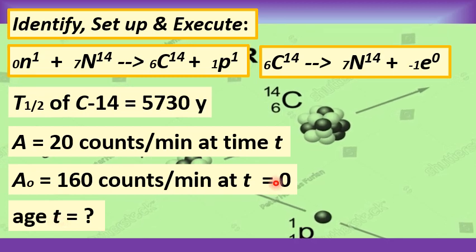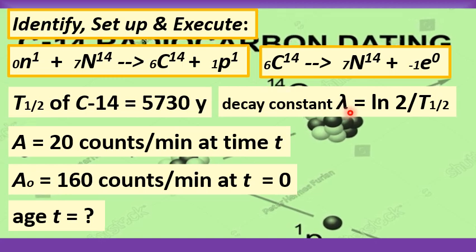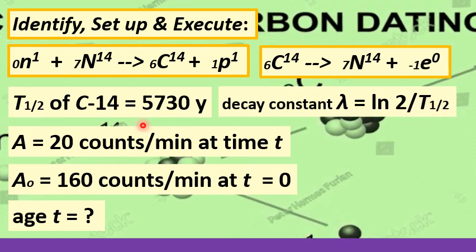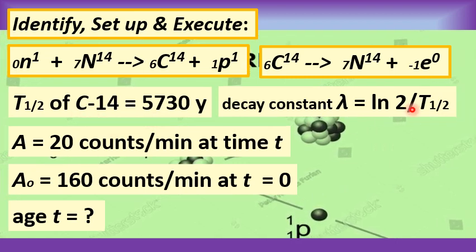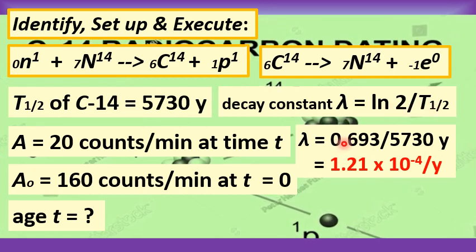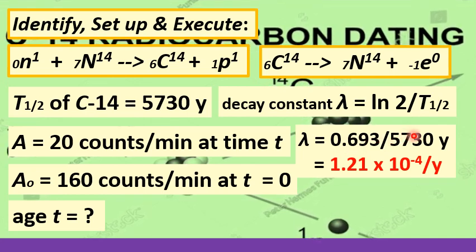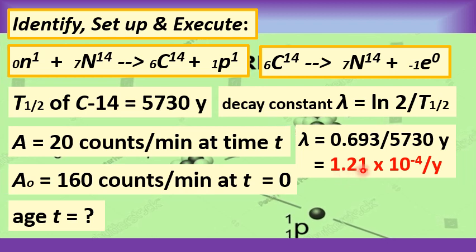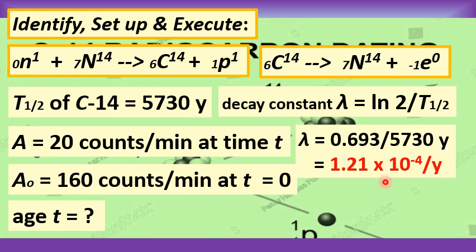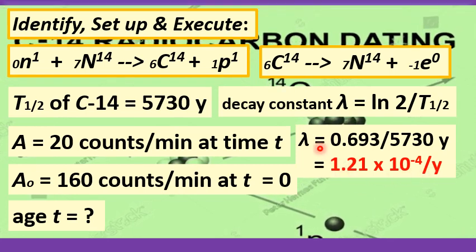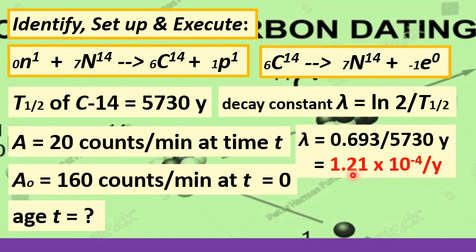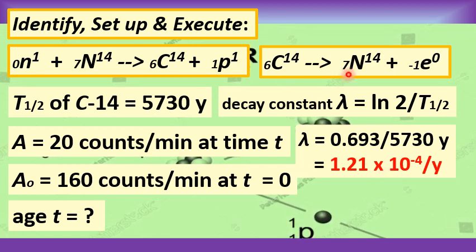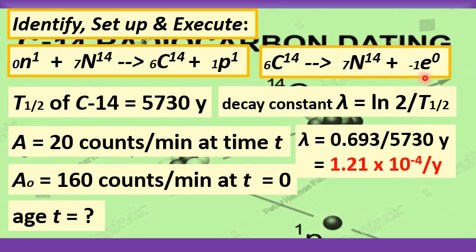Before we can determine this quantity, we have to determine what we call the decay constant denoted by the Greek letter lambda. So lambda equals the natural log of 2 divided by the half-life. The natural log of 2 is equal to 0.693, and when divided by the half-life of carbon-14 which is 5730 years, we get the decay constant λ equals 1.21 × 10⁻⁴ per year. This means that in every year we have 1.21 × 10⁻⁴ nuclei of carbon-14 decaying into nitrogen-14 because of the emission of the beta minus particle.